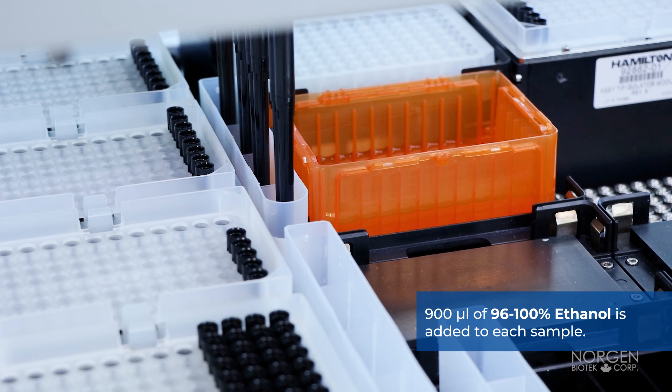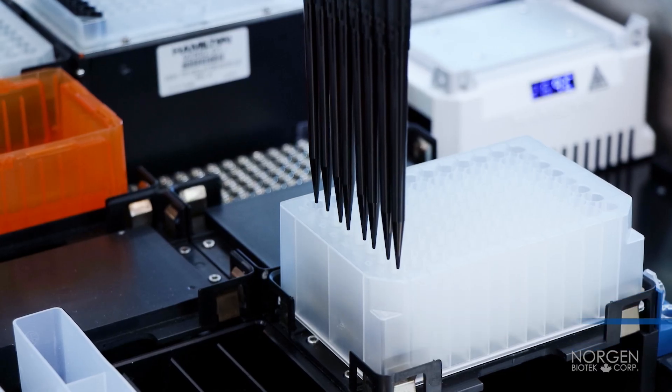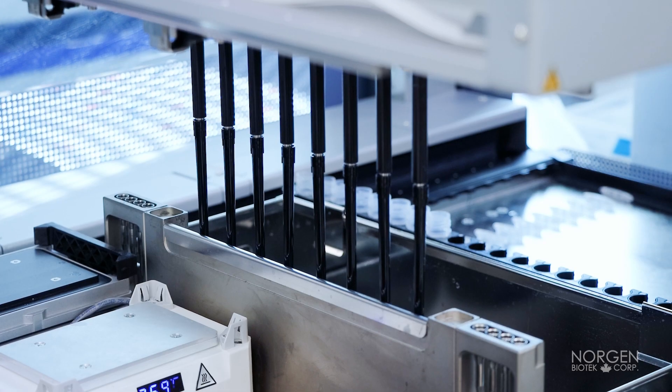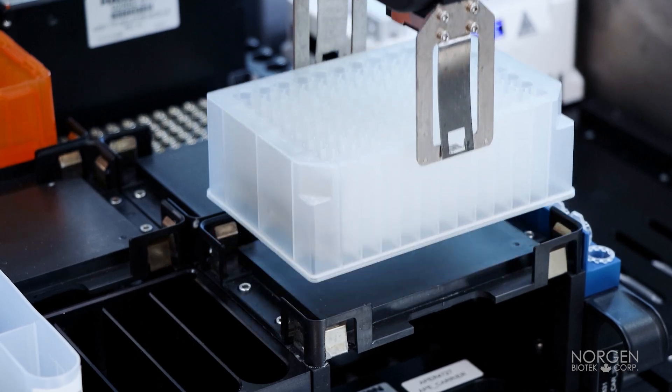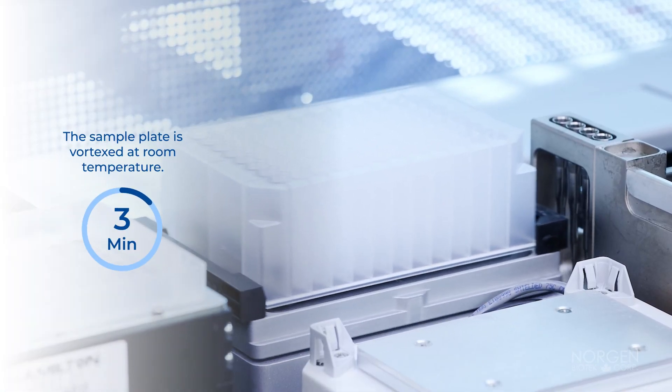900 microliters of 96-100% ethanol is added to each sample in the sample plate. The sample plate is transferred to the heater shaker and vortexed for 10 minutes at room temperature.